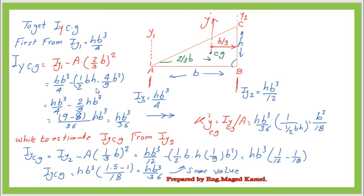the area (½BH) multiplied by the square of (2/3)B, which is 4/9 B². So IY_CG = HB³/4 minus (2/9)B³H. Performing the subtraction, we finally get IY_CG = HB³/36.